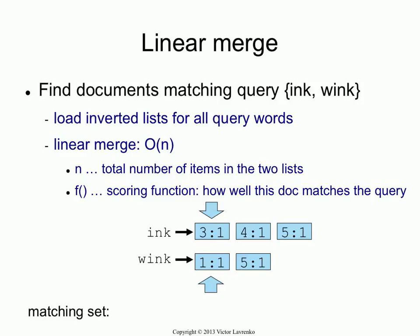You have two lists of tuples. You set a pointer at the beginning of each list, then iteratively check if the document numbers under the two pointers are equal or not. In this case, are they equal? No. If they're not equal, you take the smaller one. The smaller one is the pointer to 'wink', pointing to document number one. So you call a scoring function saying: I saw document number one, it contained the word 'wink' once, and didn't contain the word 'ink'.